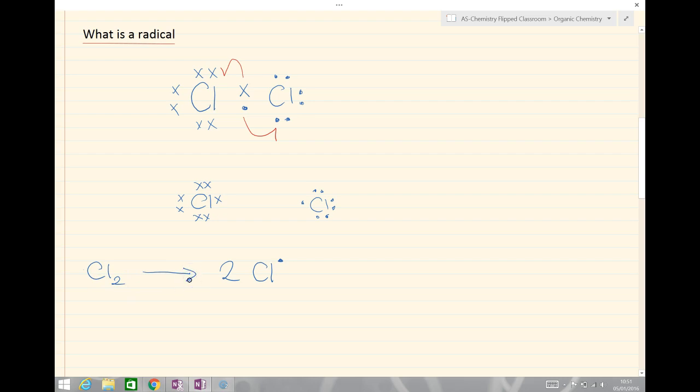We will see in due course that in order to do that we have to put energy in and that tends to be in the form of UV light. So a radical is an atom with a lone electron.